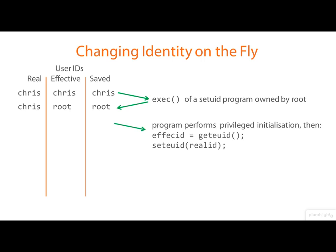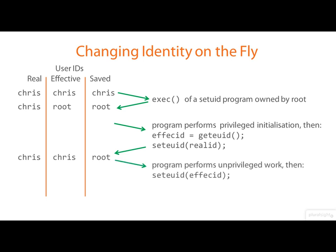The program may then go ahead and perform some privileged initialization. As an example, a web server which needs to bind port 80 will need to begin in a privileged mode, because only privileged — that is to say, root — processes can bind port numbers less than 1024. That's just a rule in the Unix and Linux world. Once that's been done, the process can switch back to its non-privileged identity by calling seteuid, back with an effective user ID of Chris.